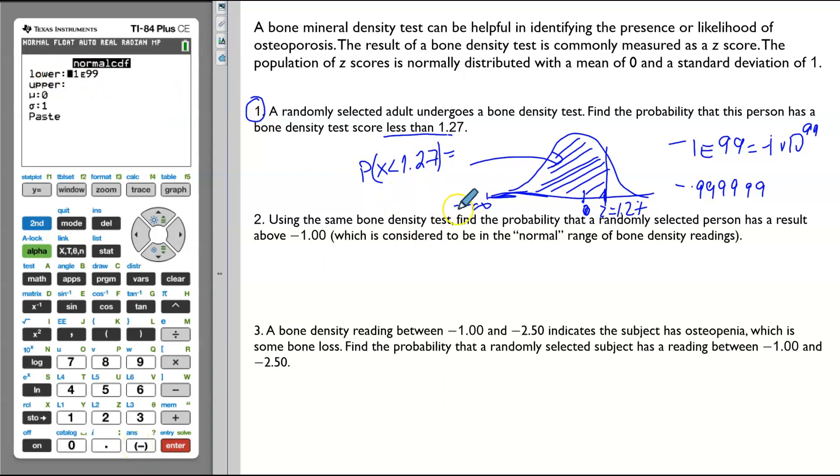Since we already have negative infinity for the left limit, let's change the upper limit, the right limit, 1.27. Our z-score. Mu is 0. Sigma is 1. Enter. Enter again.